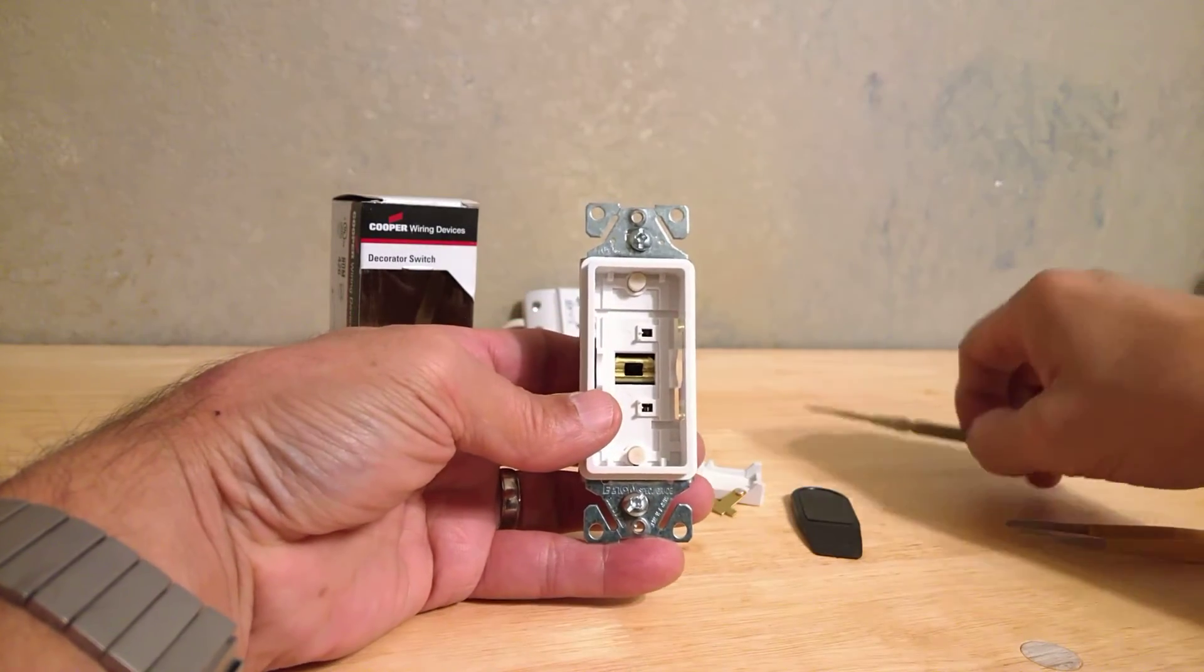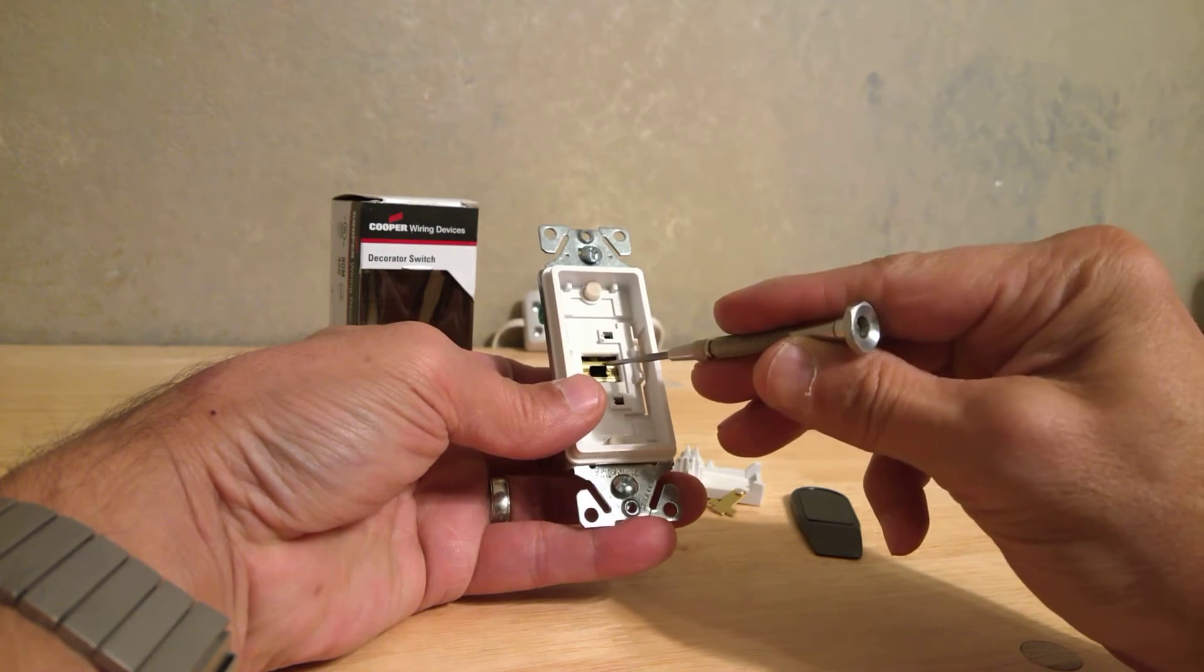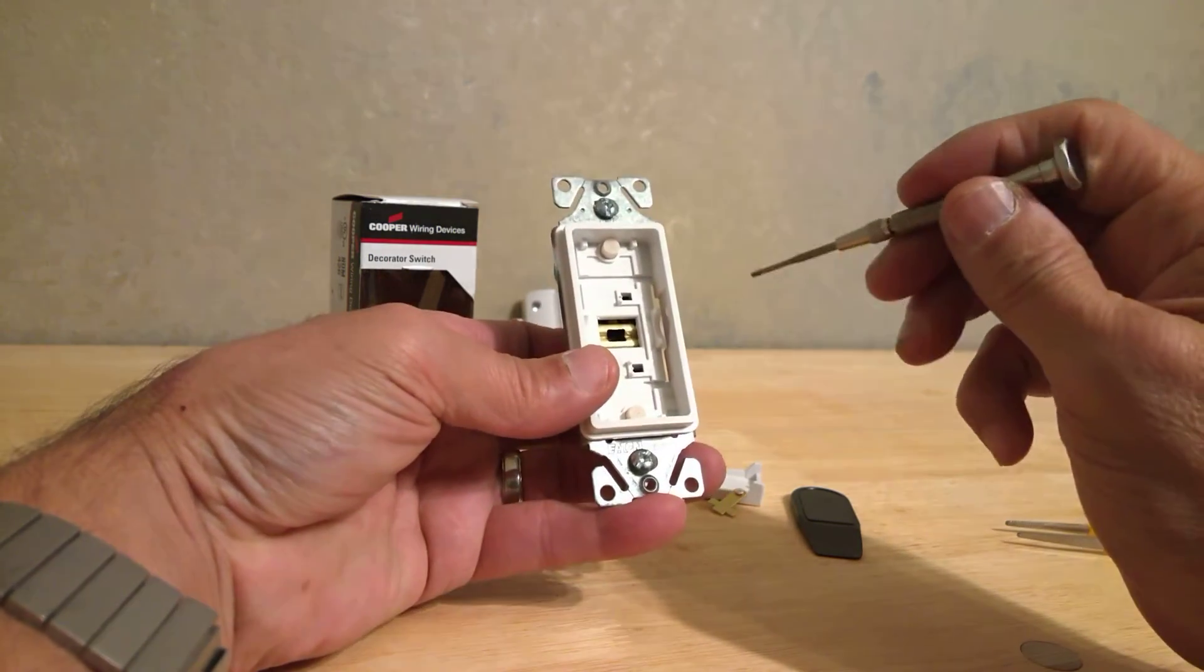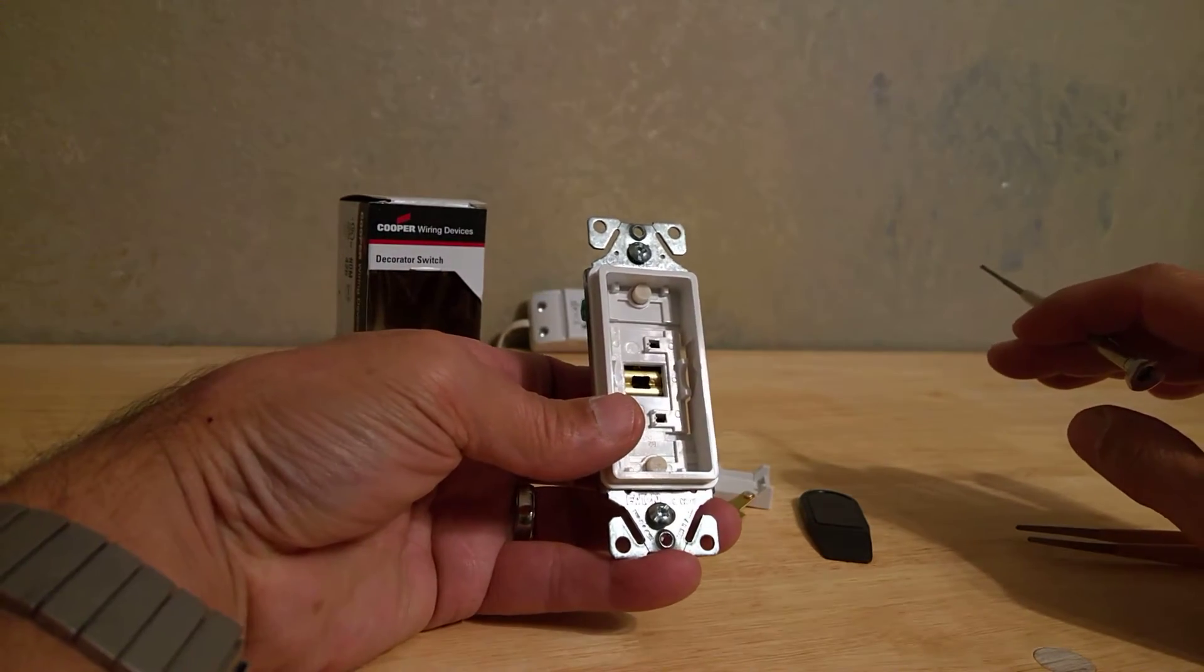Now inside the switch, I've just got a small jeweler screwdriver. We're going to pry back the mating contact that's sitting up inside there. It's really difficult to see on this particular switch. So let me see if we can get some lights on.